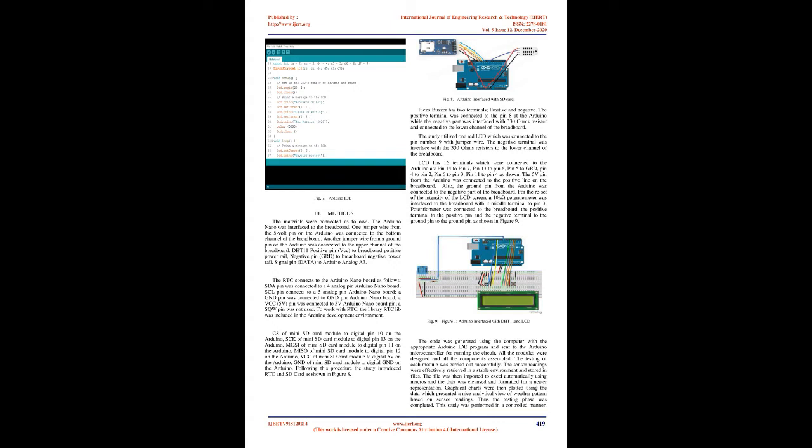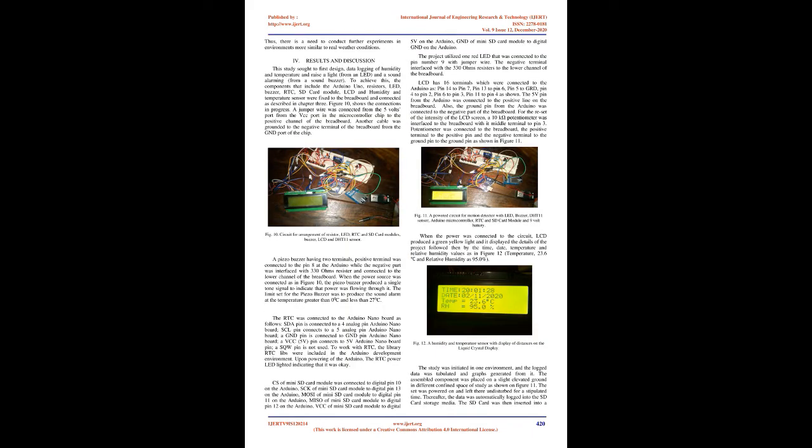The Piezo Buzzer has two terminals: the positive terminal was connected to pin 8 on the Arduino, while the negative part was interfaced with a 330-ohm resistor and connected to the lower channel of the breadboard. One red LED was connected to pin 9 with a jumper wire, and its negative terminal was interfaced with a 330-ohm resistor to the lower channel of the breadboard. LCD has 16 terminals connected to the Arduino as: pin 14 to pin 7, pin 13 to pin 6, pin 5 to GND, pin 4 to pin 2, pin 6 to pin 3, pin 11 to pin 4. A 10K potentiometer was interfaced to the breadboard with its middle terminal connected to pin 3 to control the intensity of the LCD screen.